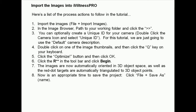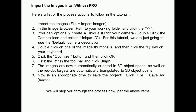For this tutorial, we are just going to use the default camera description. Double-click on one of the image thumbnails and then click the Q key on your keyboard. Click the Optimize button and then click OK. Click the R++ in the toolbar and click Begin. The images are now automatically oriented in 3D object space, and the red dot targets are automatically triangulated to 3D object points. Now is an appropriate time to save the project: click File and Save and give it a name.